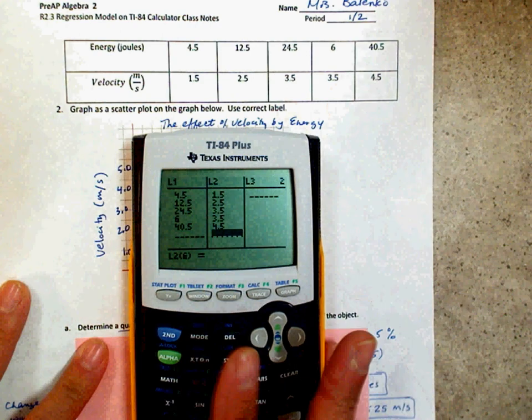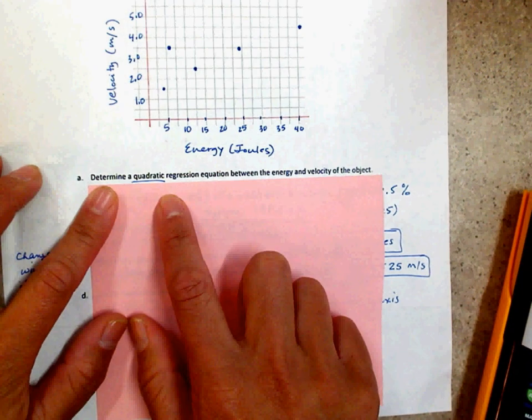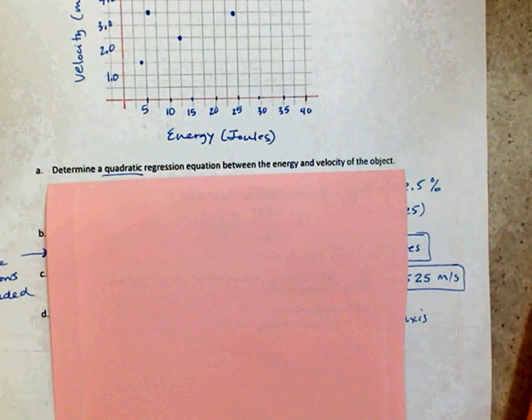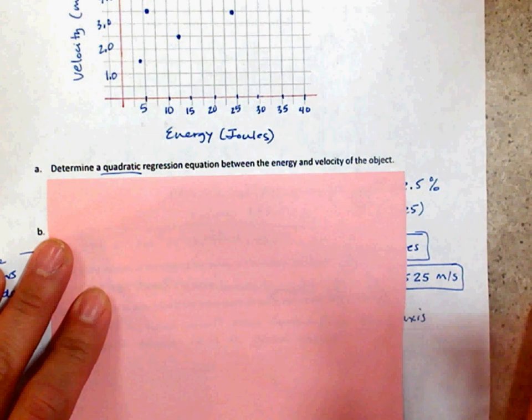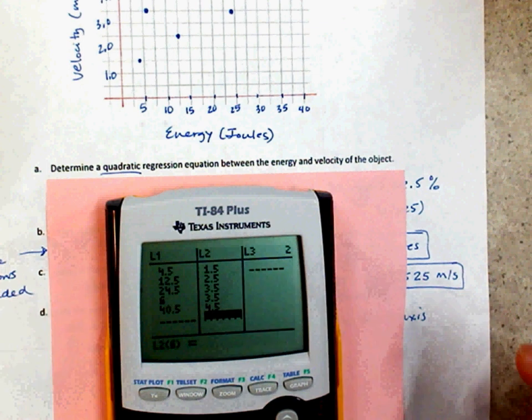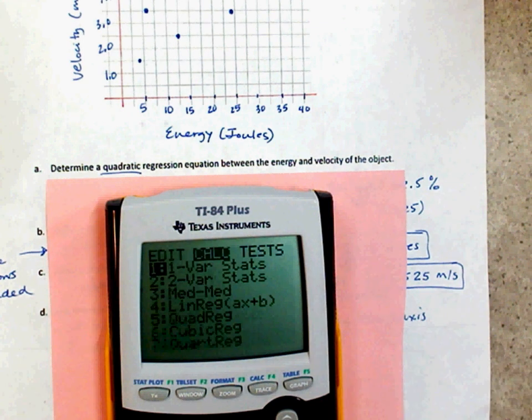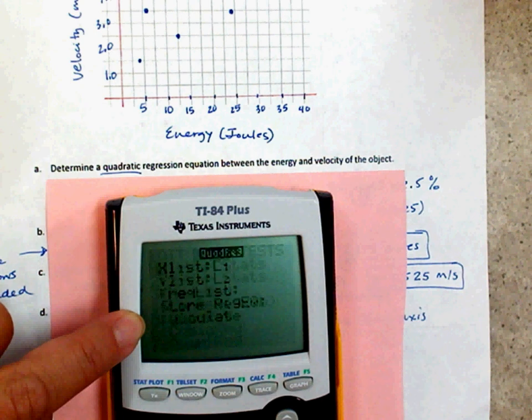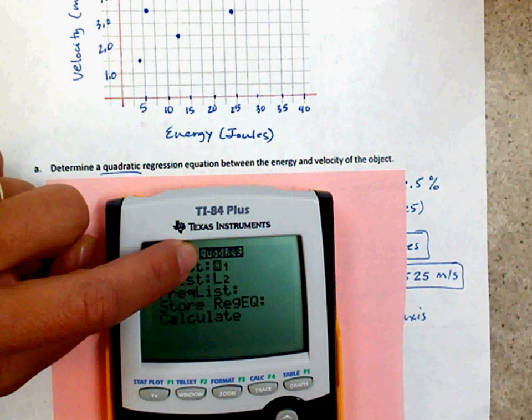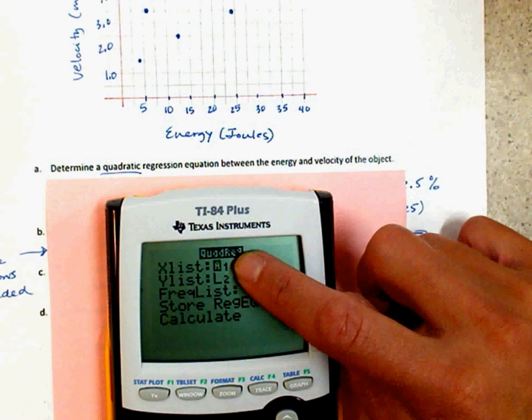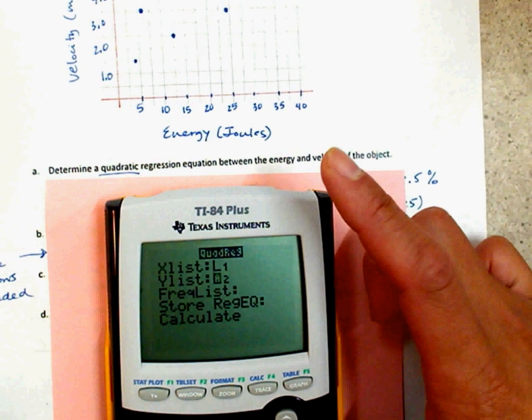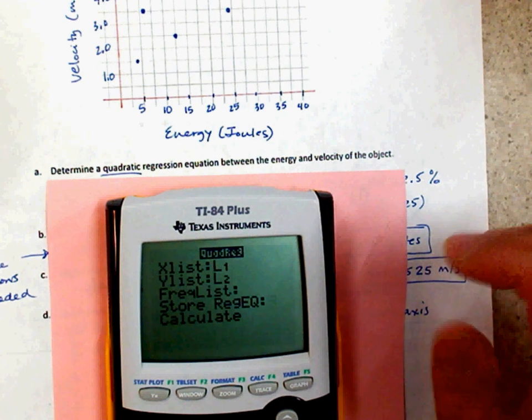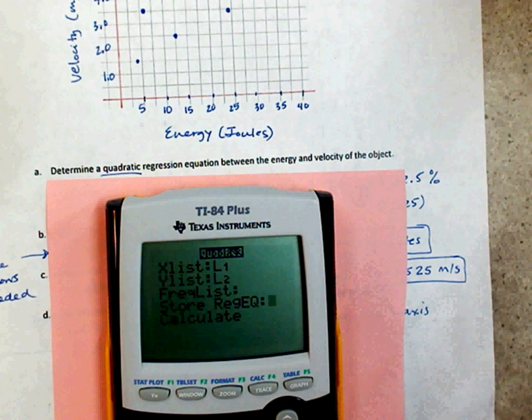It says, part A says, determine a quadratic regression. Alright. So, I'm wanting to find a quadratic. So, I'm going to hit stat, and I'm going to right-click to calculate. Where is quadratic? Quadratic is number five. See how it says quadratic regression? I place my x in L1, place my y in L2, and I'm going to store it. I like to store mine, because why not? You're going to use it to find other stuff.